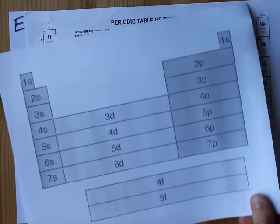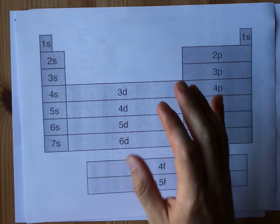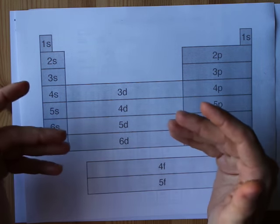But I want you thinking about the periodic table, at least in terms of electron configuration, this way. Because this shows you the order in which the orbitals are filled.